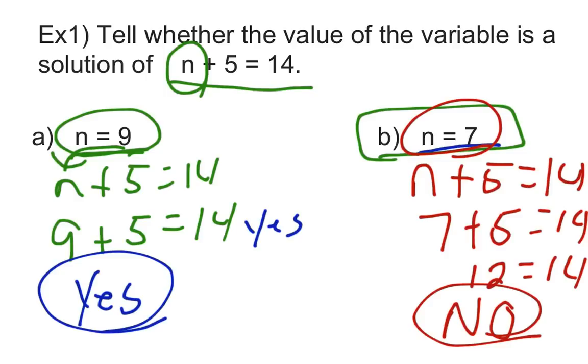So we figured out that for part A here, n equals 9. Yes, that was an answer to our equation. And for part B, n equals 7, we figured out that no, that wasn't an answer to an equation. So again, that's what they're asking us to do is simply, they're giving us possibilities of what n's going to be. And we're simply saying, yes, it works, or no, it doesn't work. That's what we're trying to figure out.